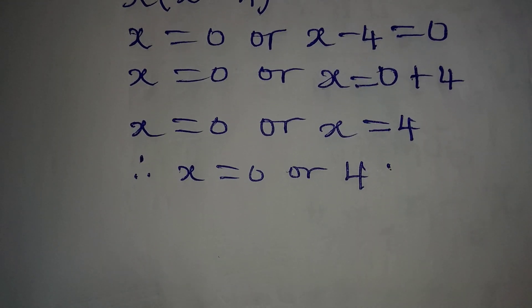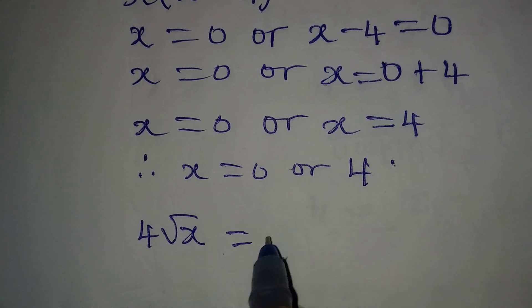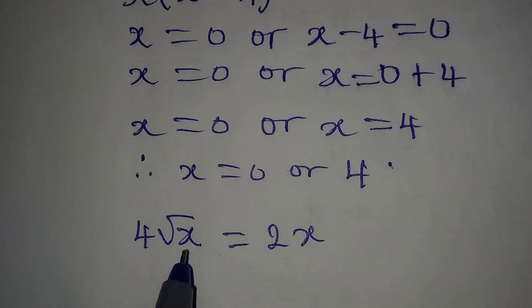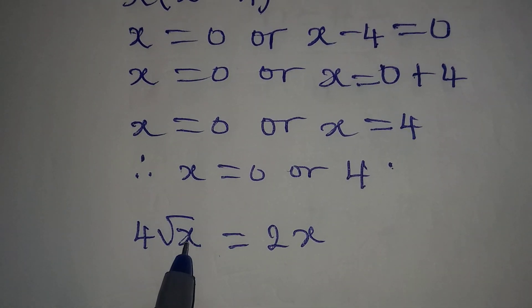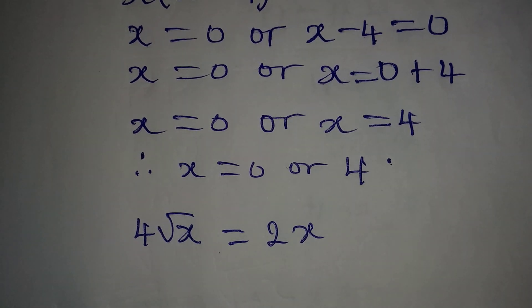Now look at the original equation. We have 4√x = 2x. If you put 0 in here, it's going to be 4 times 0 and it will also be equal to 2 times 0.